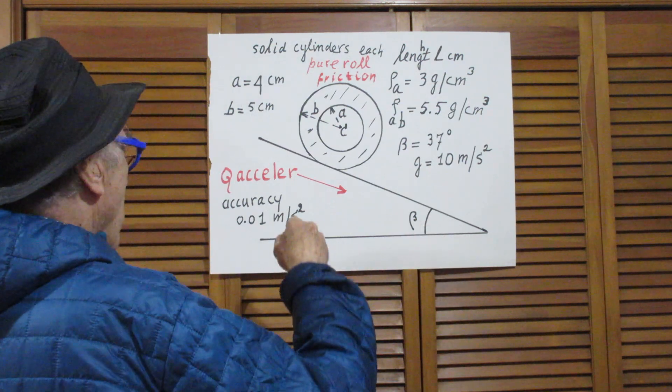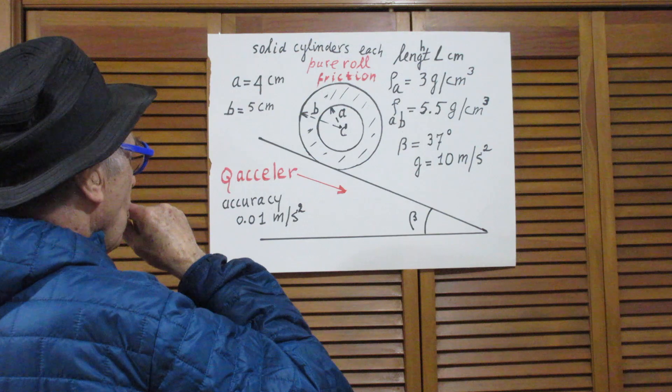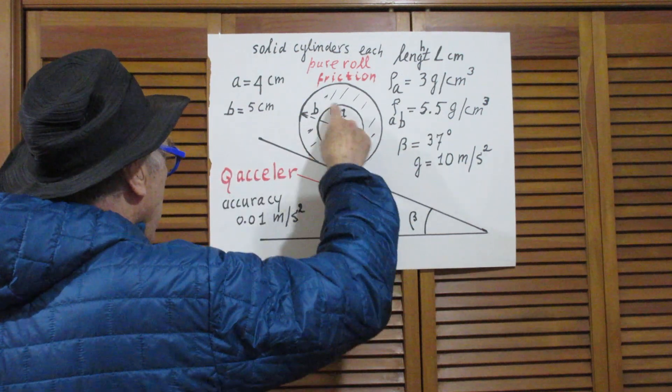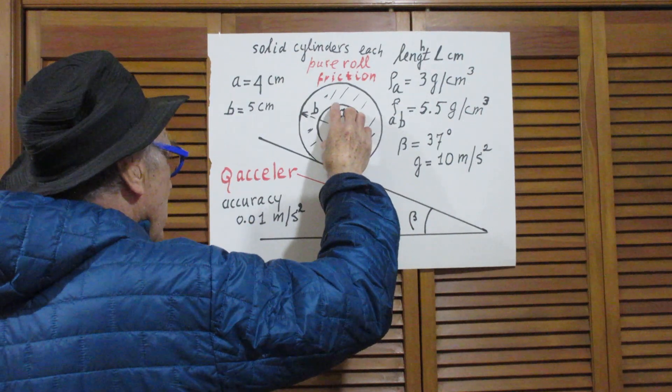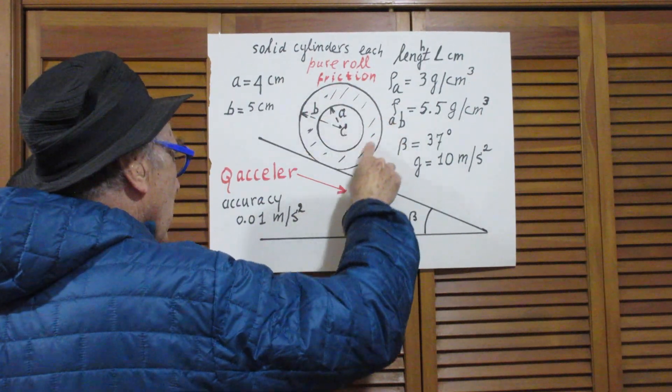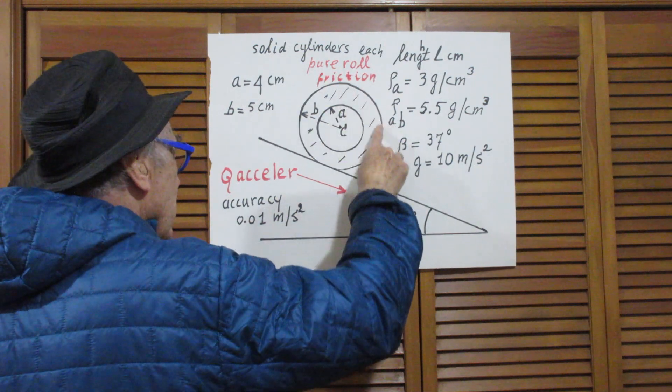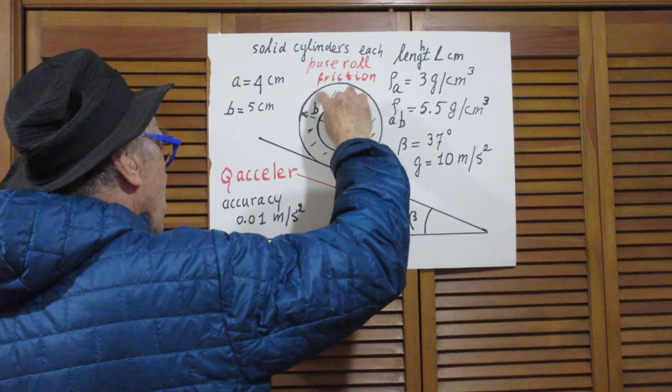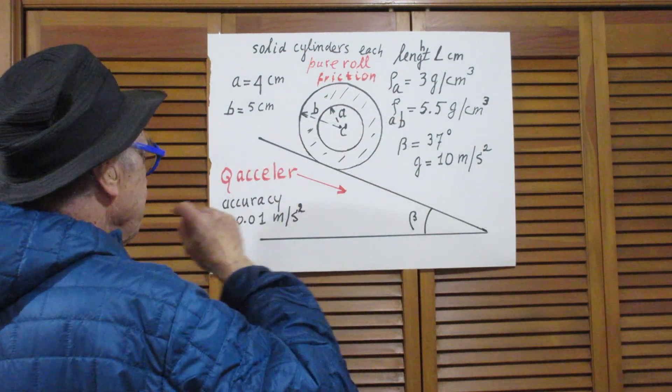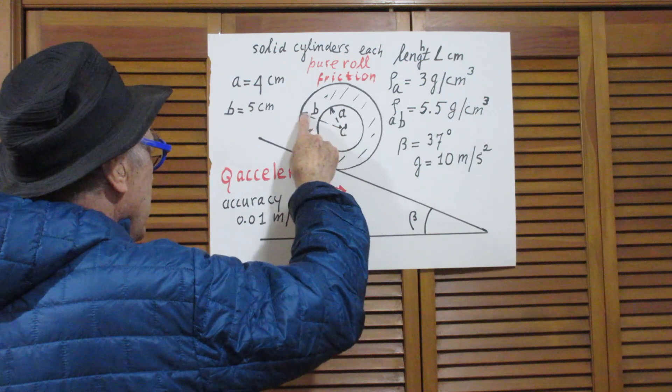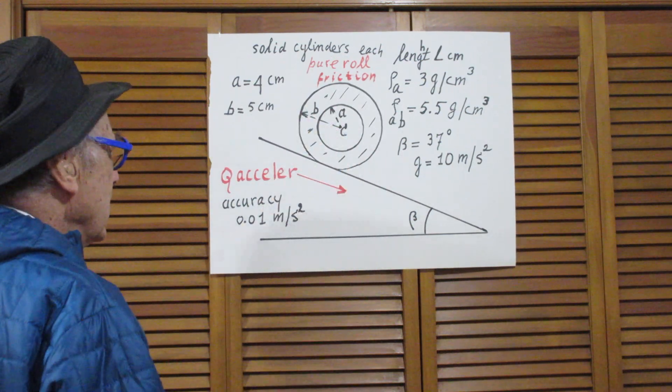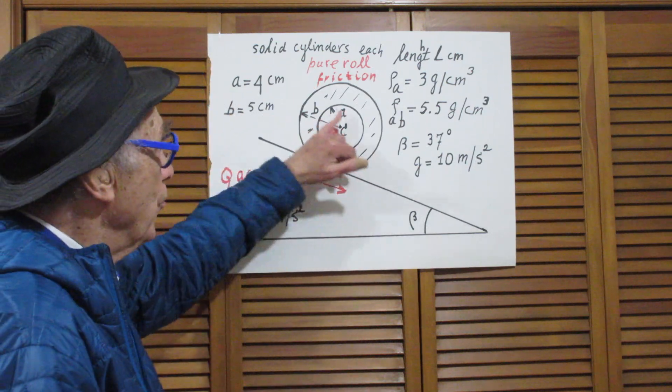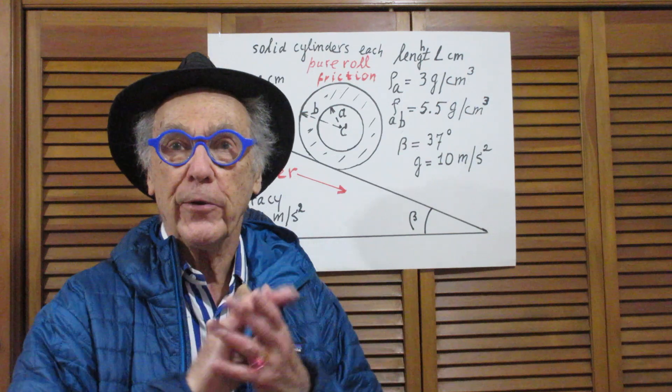And this is the cylinder. In fact, it is one cylinder with radius a which is inside this cylinder which is really like a ring. Its outer radius is b and its inner radius is a, and they are attached to each other so they cannot move - one cannot move relative to the other.